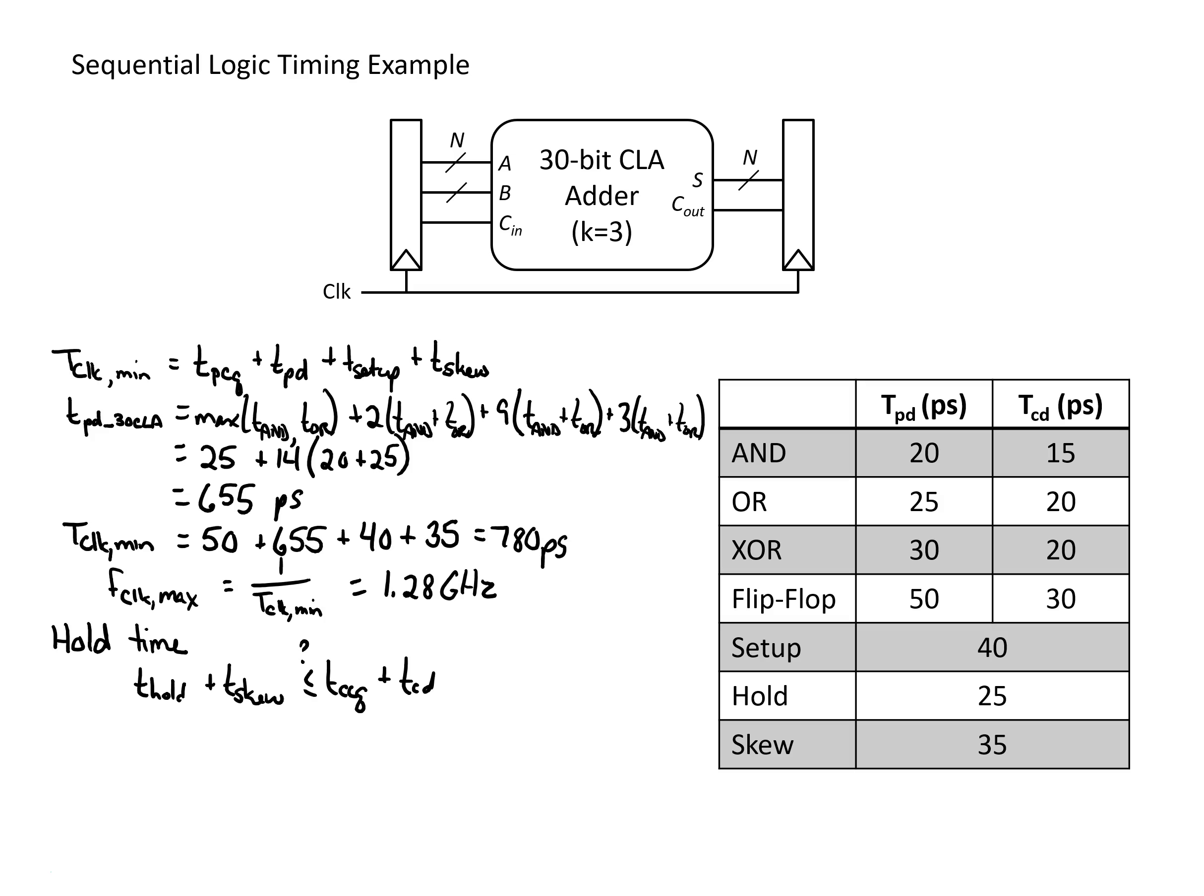For the combinational logic, in our other video it was found that the shortest path is just the delay through a single AND gate and a single OR gate. In this case we're looking at the entries for the contamination delay, the shortest time through each of these. So we have 15 plus 20, saying that the shortest time through our combinational logic would be 35 picoseconds.